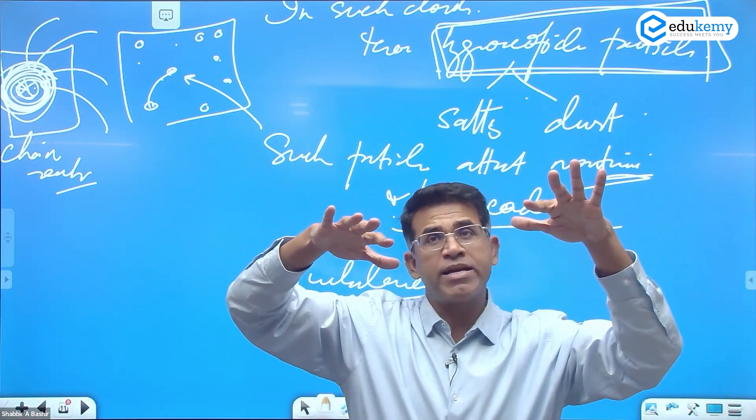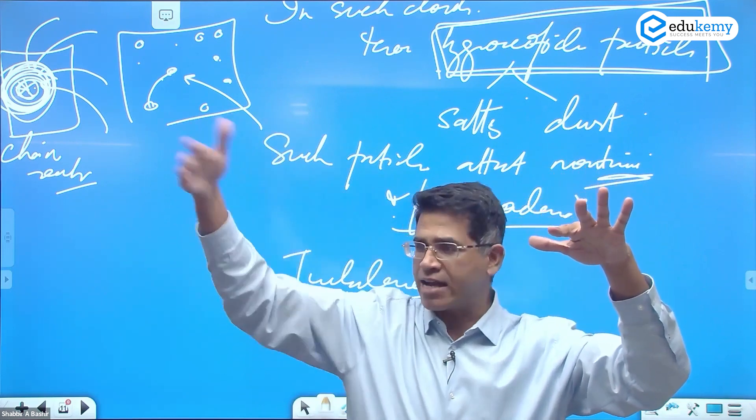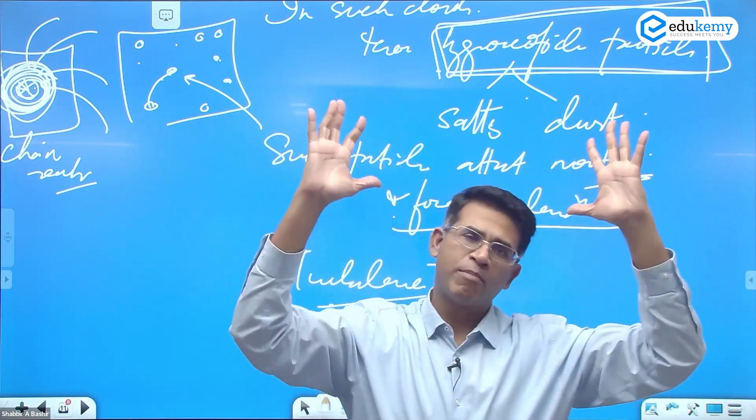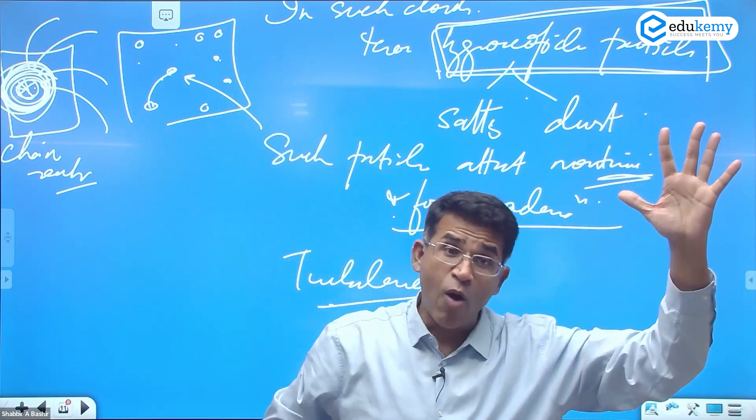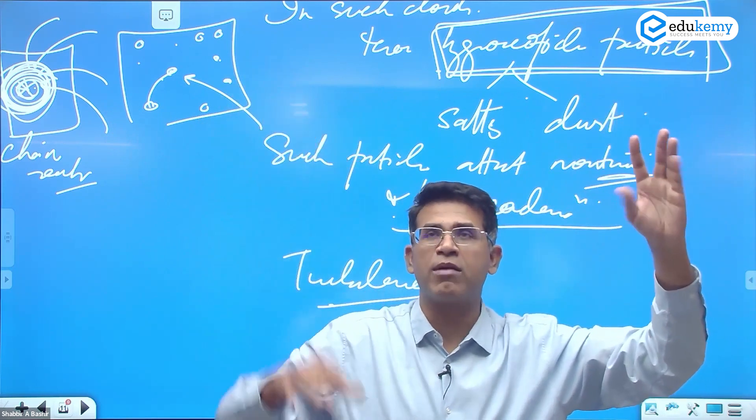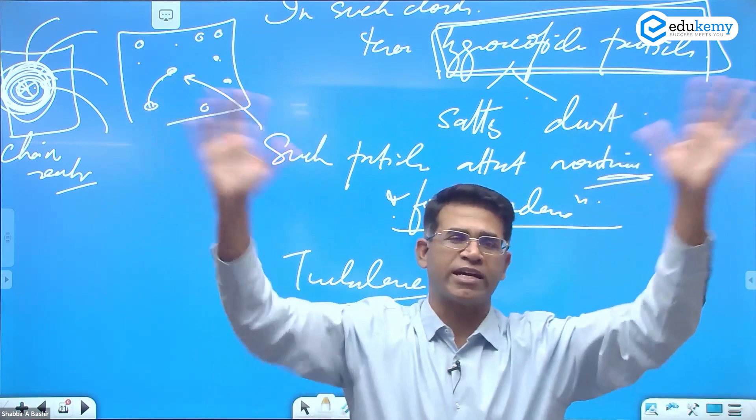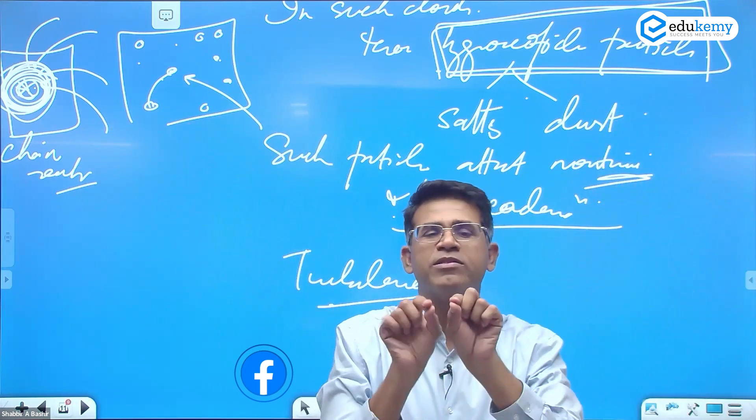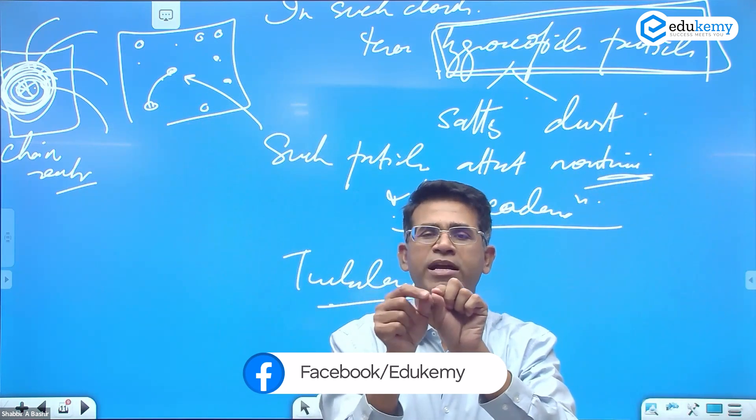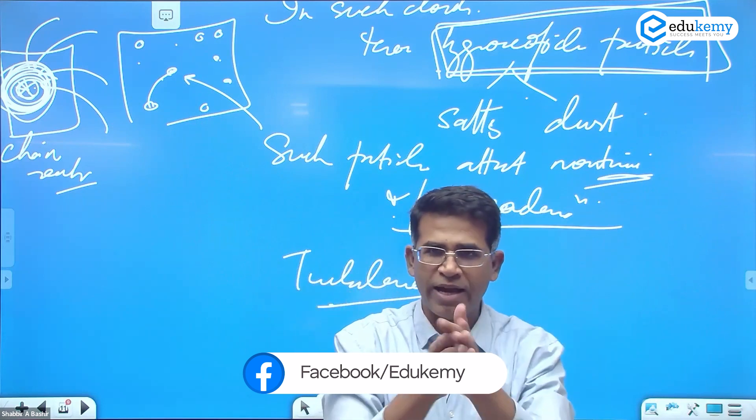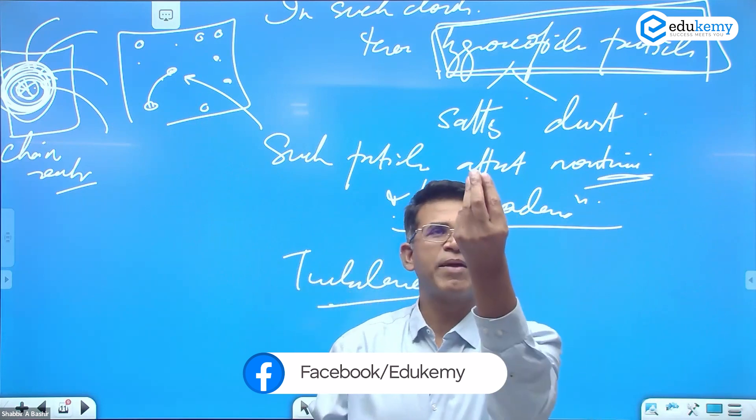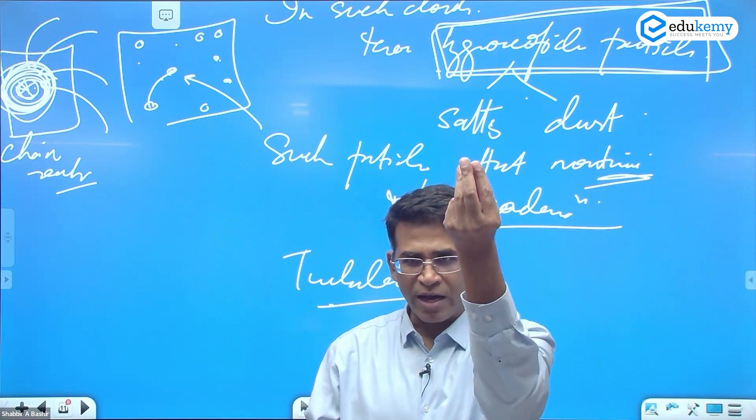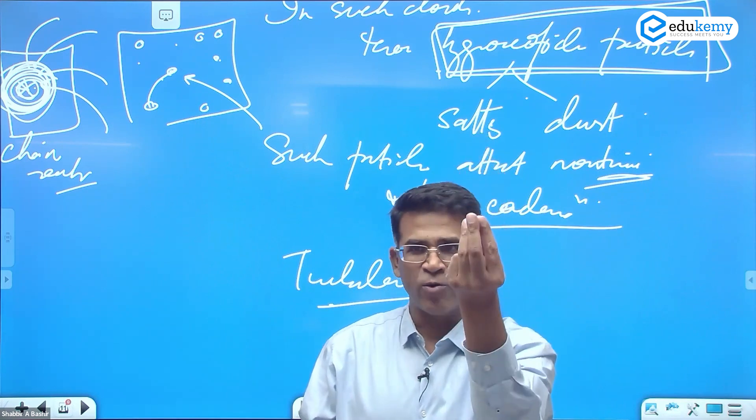There is condensation but it is not a continuous chain reaction. There are droplets but small droplets. Now what we require is turbulence - something should shake it. When the shaking happens, the small particles will collide. When they collide they become larger. When they become larger they start falling down.